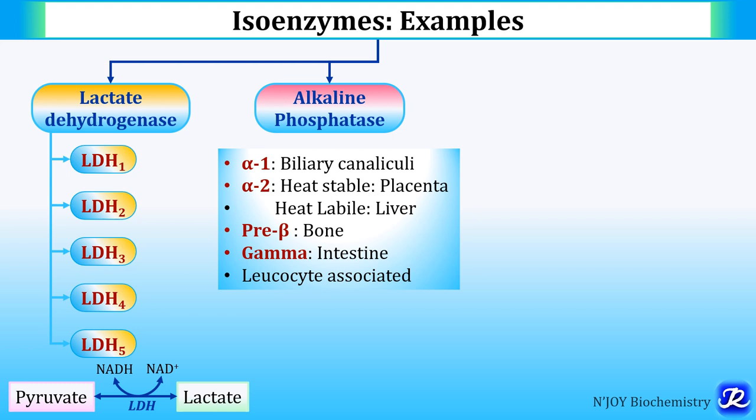Alkaline phosphatase — this enzyme is involved in the removal of a phosphate group in an alkaline medium — has 6 isoenzymes: Alpha-1, present in the biliary canaliculi; Alpha-2 has two variants, one heat stable located in the placenta and one heat labile present in the liver; Pre-beta present in bone; Gamma present in the intestine; and the sixth is leukocyte-associated alkaline phosphatase.